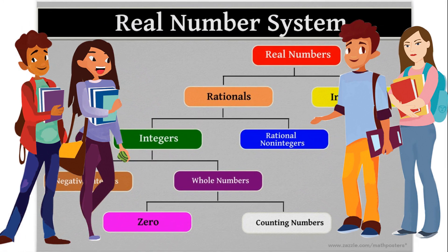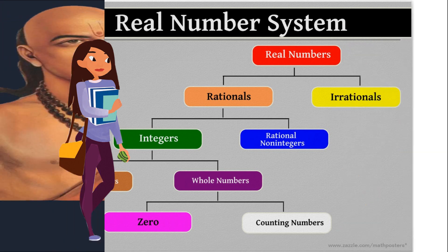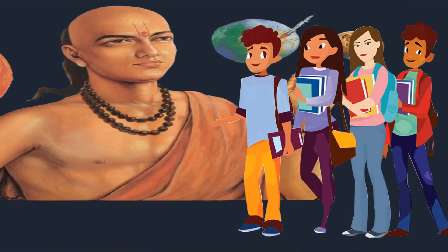Here are a few great mathematicians. Aryabhatta gave the formula: (a + b) whole square is equal to a squared plus 2ab plus b squared. Further, he worked on the place value system, using letters to signify numbers and stating qualities.